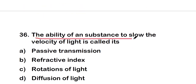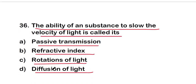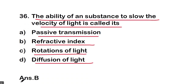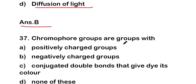The next question: the ability of a substance to slow the velocity of light is called its passive transmission, refractive index, rotation of light, or diffusion of light? The right answer is option B — refractive index. The ability of a substance to slow the velocity of light is called refractive index.